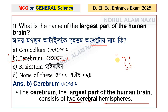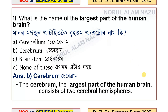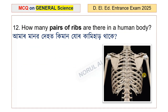Name the largest organ of the human body. Question number 12: How many pairs of ribs are there in a human body?